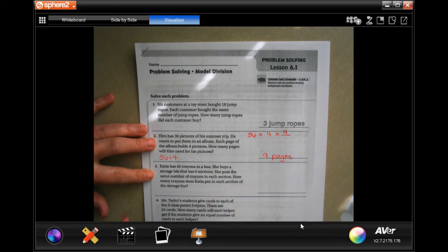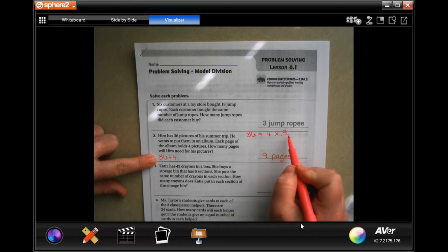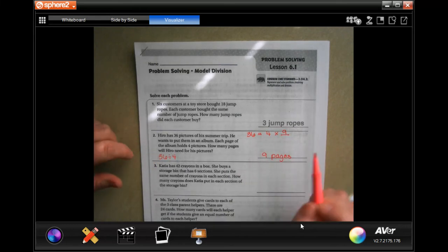That is all division is. It's 36 divided by 4 equals 9, same thing. Don't let it fool you.